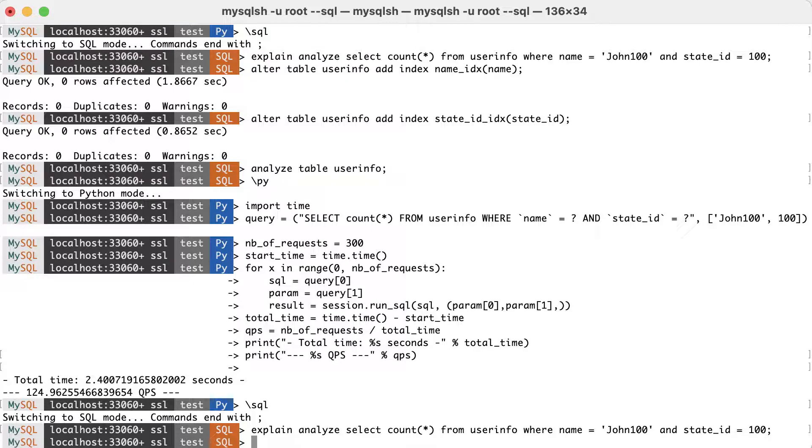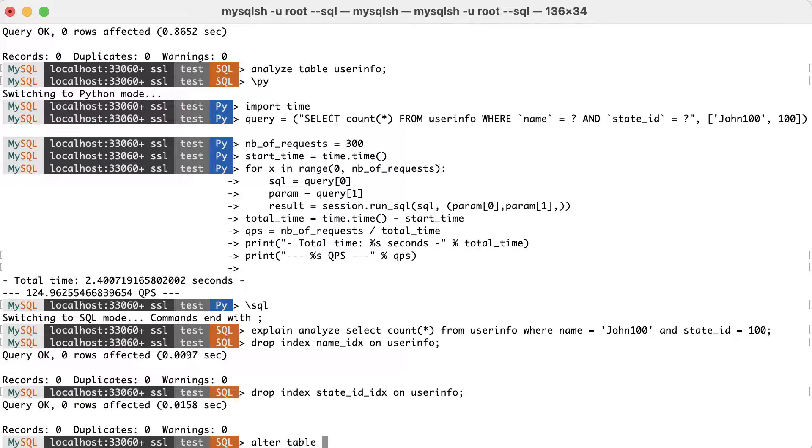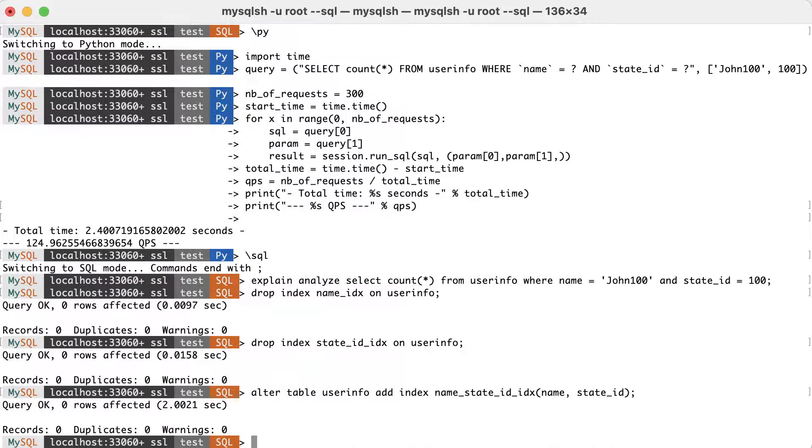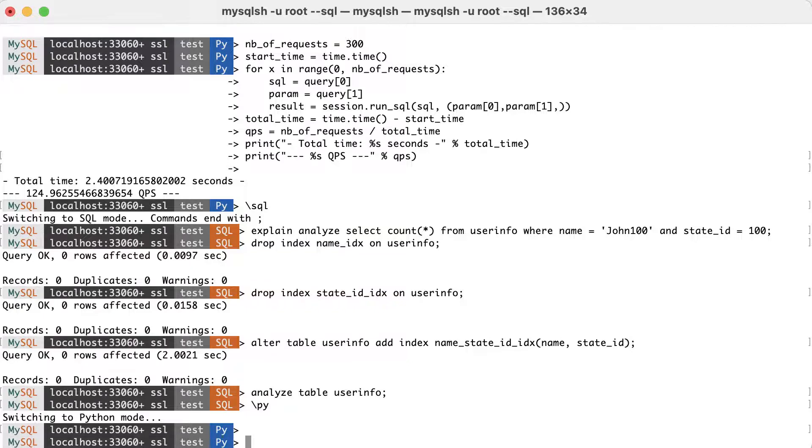So now, we want to replace the two individual indexes with a composite index. Therefore, we drop the two current indexes and then add a multi-column one. We execute the Python script again.